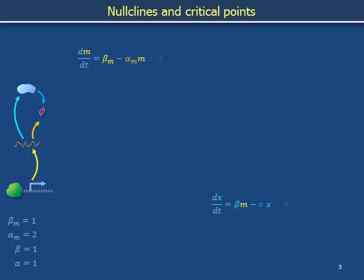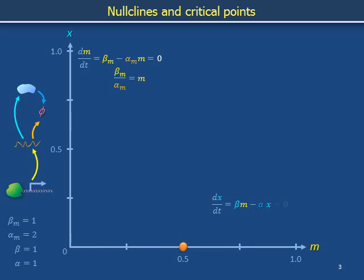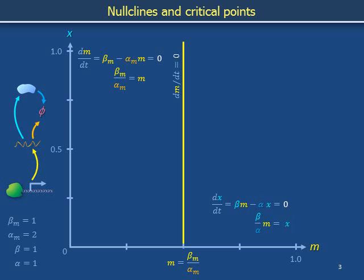Protein translation and degradation can be balanced for various values of m and x. Let's study the situation where messenger RNA is constant in time. Moving the degradation term to the other side and dividing to isolate m, the time derivative of m equals zero along a vertical line at m = beta_m / alpha_m in the x versus m plane. The x versus m plane is called the phase plane of the system — every instantaneous state of this model can be characterized by protein level x and messenger RNA level m. Now looking at the situation in which dx/dt = 0, moving terms and isolating x as a function of m, the time derivative of protein level vanishes along a slanted line x = beta × m / alpha.